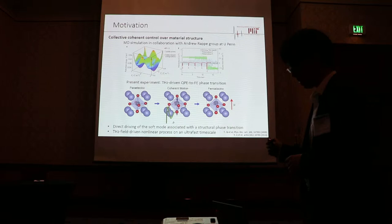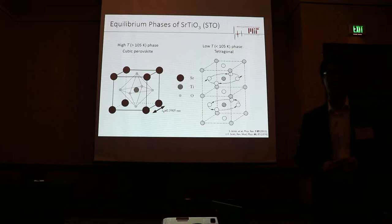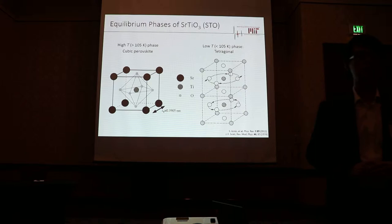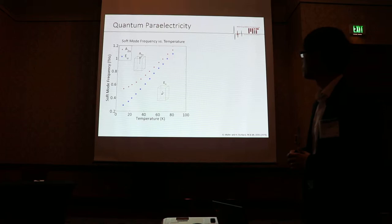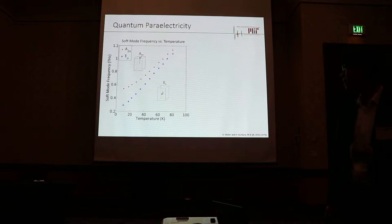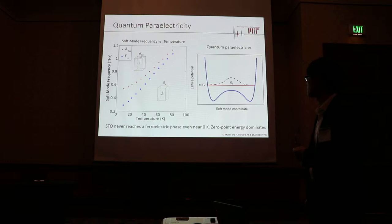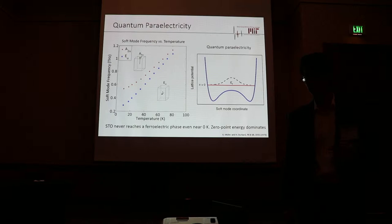Let me give some brief background information about STO. Strontium titanate has a cubic perovskite structure at room temperature, and it undergoes a structural phase transition to a tetragonal symmetry at 105K. At these low temperatures, two ferroelectric phonon soft modes become lower in frequency. However, unlike typical ferroelectrics, these soft modes never soften to zero frequency, even near zero K, because the zero-point energy of quantum fluctuations of the ions exceeds the double-well potential barrier, such that the ground state wave function is never localized.